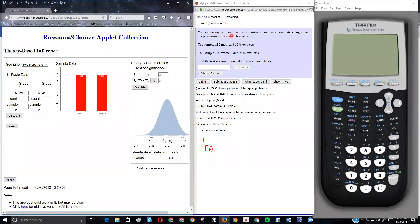And the claim is that the proportion of men who own cats is larger than the proportion of women. So we're going to go with the right-tail test. We're going to make group one be the men and group two be the women. I know there's 180 men and 100 women.